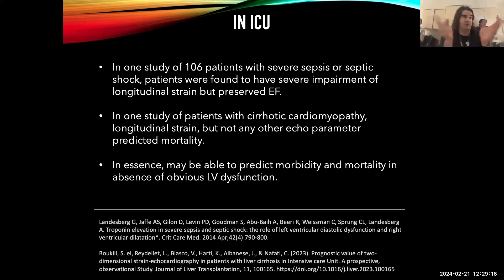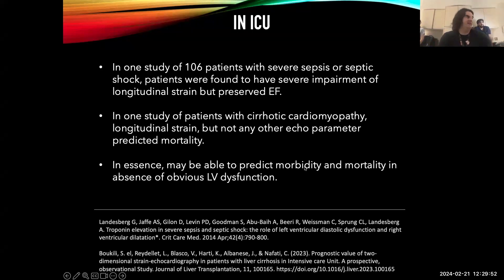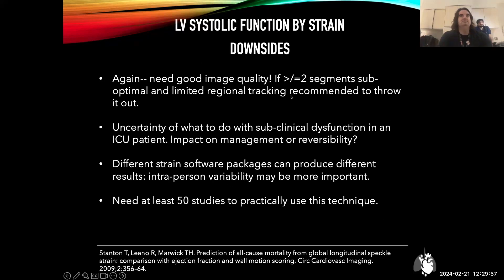Most of this is done in post-processing where you acquire the images, go into the machine, and then you get the strain map. The problem is: you find this thing, and then what do you do about it? For example, in patients with sepsis cardiomyopathy, strain was one of the few parameters that predicted mortality. You could imagine using it in patients with a normal EF in septic shock to predict that they actually do have heart dysfunction that's not obvious on gross inspection. You need good imaging quality — if greater than two segments are suboptimal, it should be thrown out. You need about 50 studies to practically use this technique. We're probably a long ways off from fully employing it, but from a pure science standpoint, it's fascinating that we can detect this kind of subclinical dysfunction.